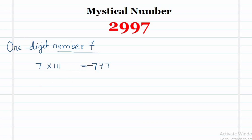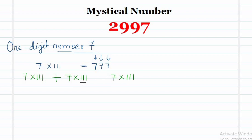Next, what are the digits of 777? The digits are 7, 7, and 7. So we multiply each of these digits by 111 — that is 7 into 111, three times — and then add them together. This gives us 2331.